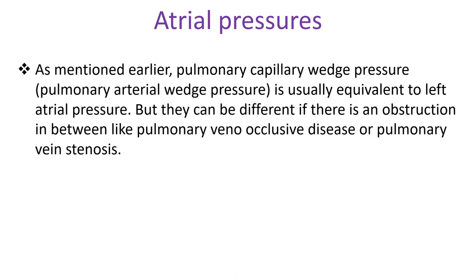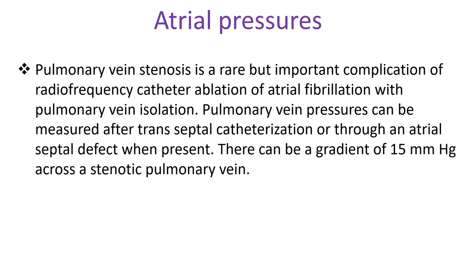Pulmonary capillary wedge pressure, also known as pulmonary arterial wedge pressure, is usually equivalent to left atrial pressure. But they can be different if there is an obstruction in between, such as pulmonary veno-occlusive disease or pulmonary vein stenosis. Pulmonary vein stenosis is a rare but important complication of radiofrequency catheter ablation of atrial fibrillation with pulmonary vein isolation. Pulmonary vein pressures can be measured after transseptal catheterization or through an atrial septal defect when present. There can be a gradient of 15 mmHg across a stenotic pulmonary vein.